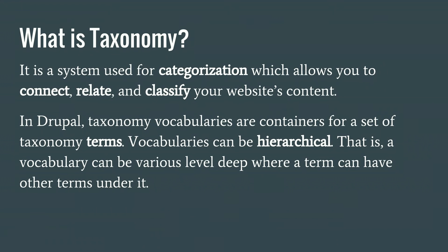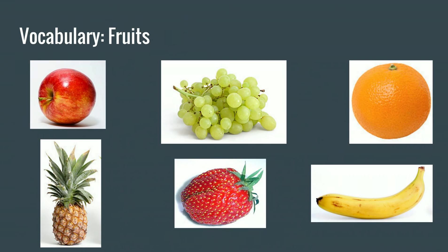Taxonomies. This is a scary word sometimes, but it is used for categorization. You can use it to collect, relate, and classify content. The taxonomy system only requires two words: vocabulary and term. A vocabulary is a group of terms — as simple as that. For example, if we want to classify fruits, we have a vocabulary called 'fruits,' and we can have terms for apple, grapes, oranges, pineapple, strawberry, bananas, and so on. Taxonomy terms can also have fields, so in addition to the name, you can have a picture or any other field available in Drupal.